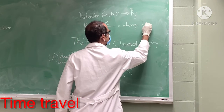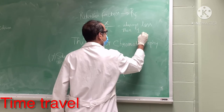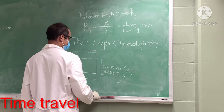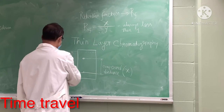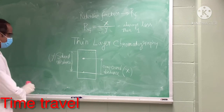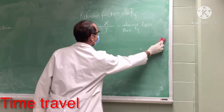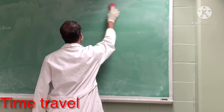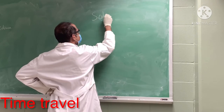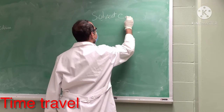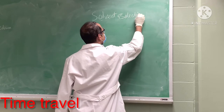The retention factor gives you an idea of how fast or how slow your compound is moving. The higher the retention factor, the faster the compound moves. A smaller retention factor means the compound is slow-moving, and you need to increase the polarity of the solvent. This is the primary concept of thin layer chromatography.